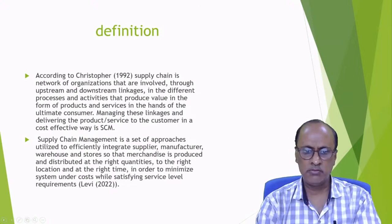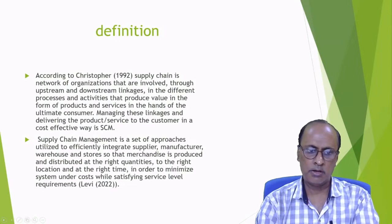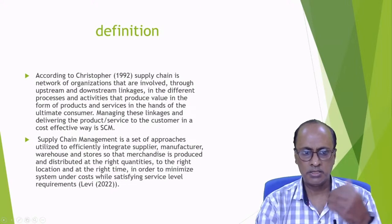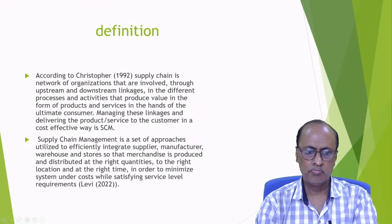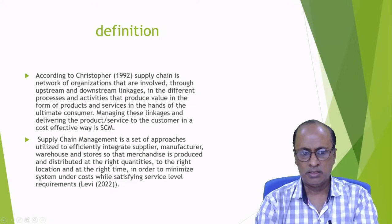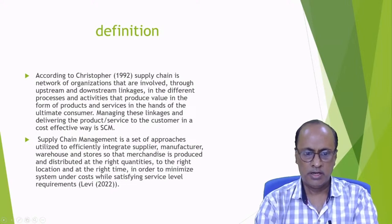The first definition speaks about upstream and downstream linkages. All companies have upstream and downstream linkages. When materials come from the suppliers, it's called upstream linkages, and when materials go to the final destination, it's called downstream linkages. The ultimate aim of supply chain management is that the customer should get the product at the right time, in the right place, and at the right cost.